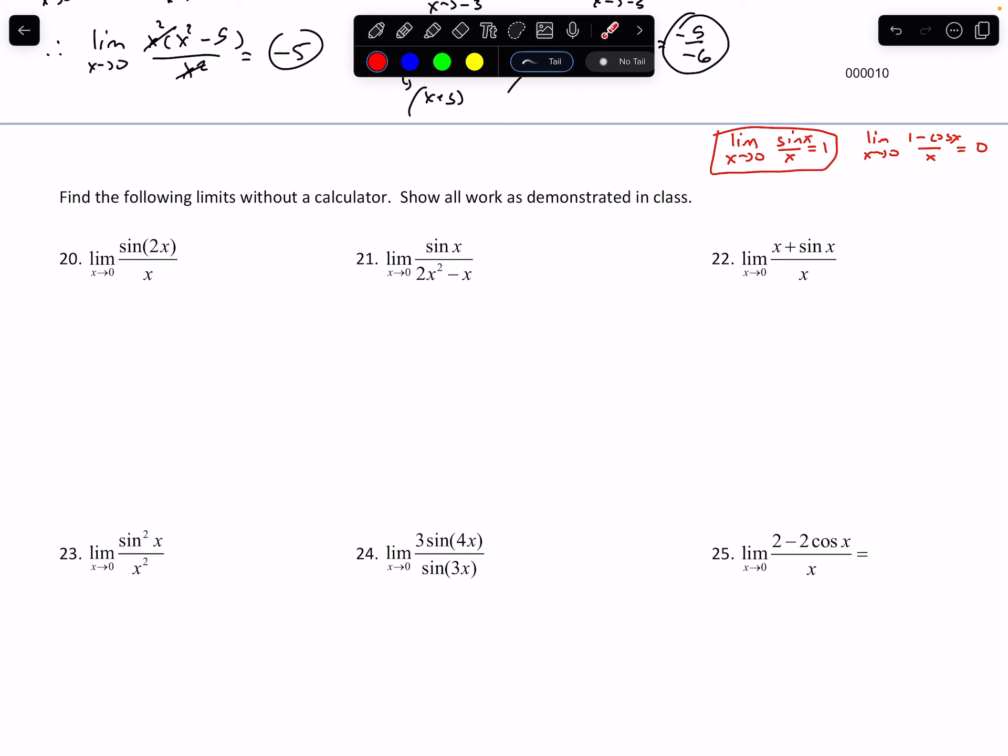we have this sin(2x) over x. Now notice, they're not the same. I know that sin of x over x becomes 1 as x approaches 0. But these have to be the same. And notice right now, these are not the same. So we just need to think about what algebraically can we do to get them to be the same? And of course the very simple answer is to multiply both top and bottom by 2.